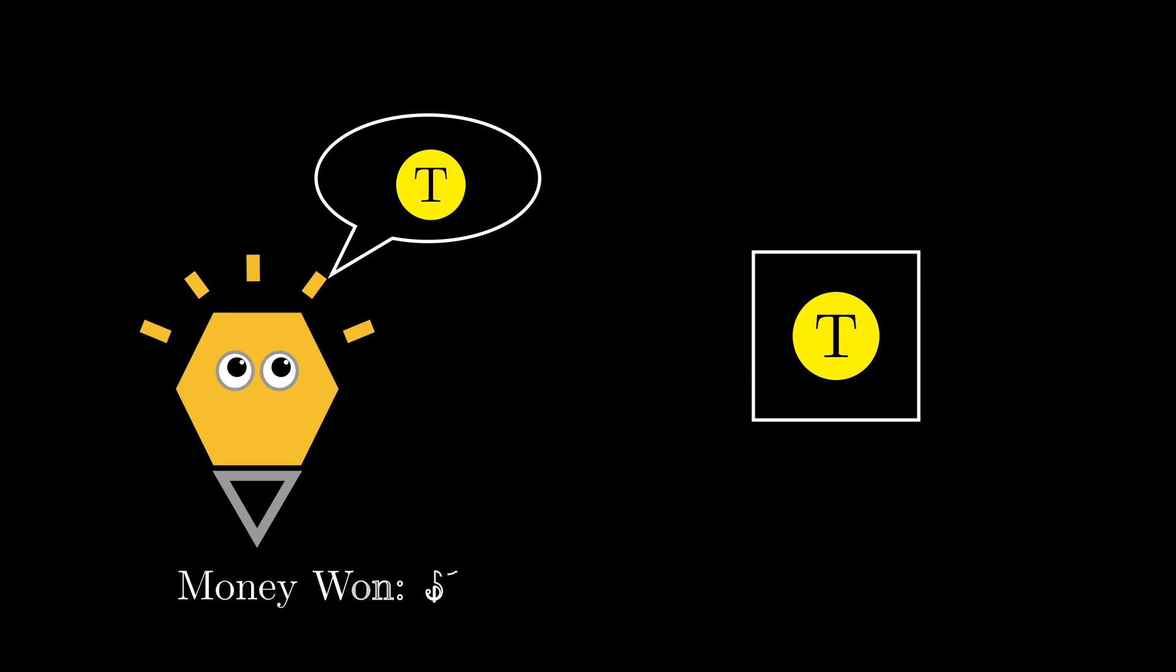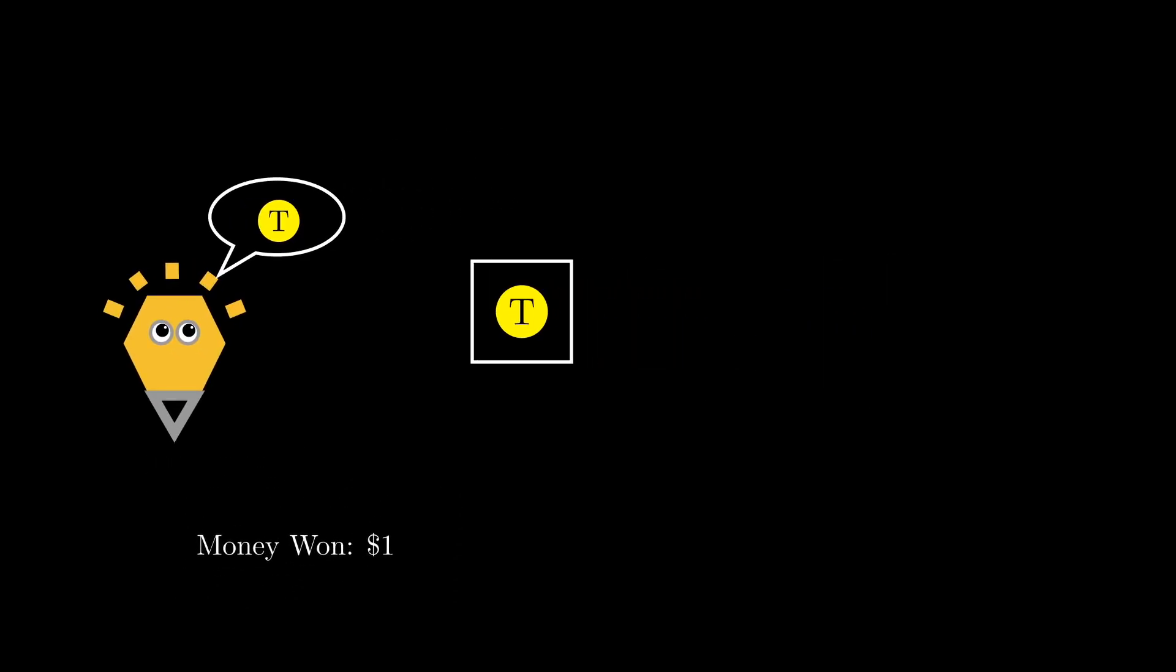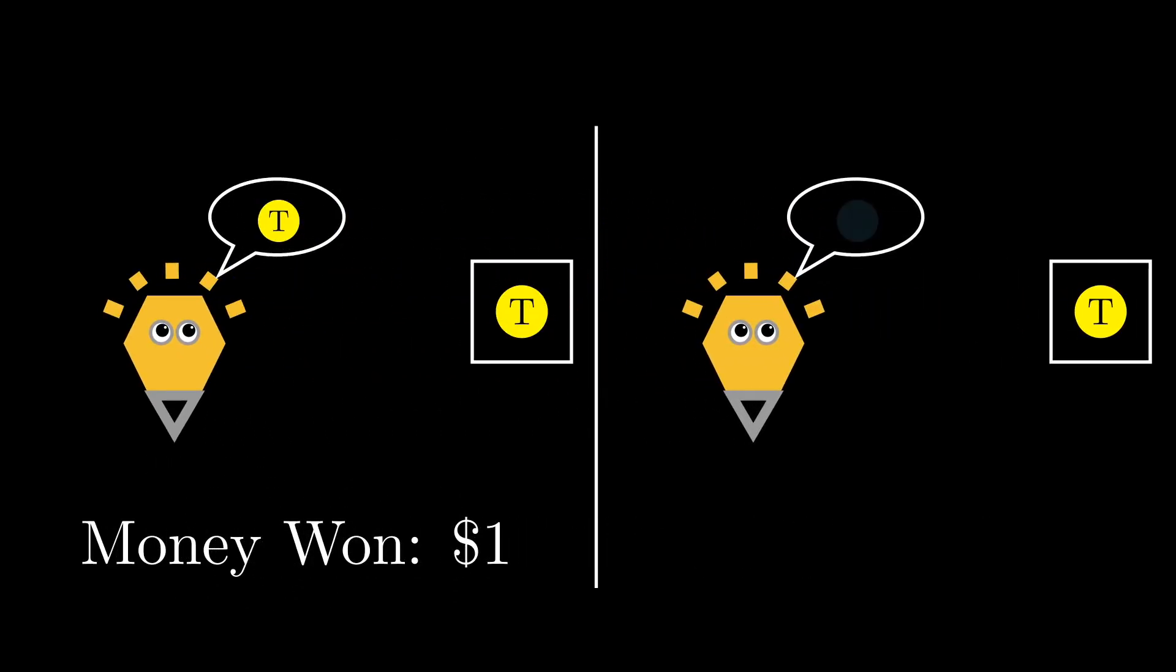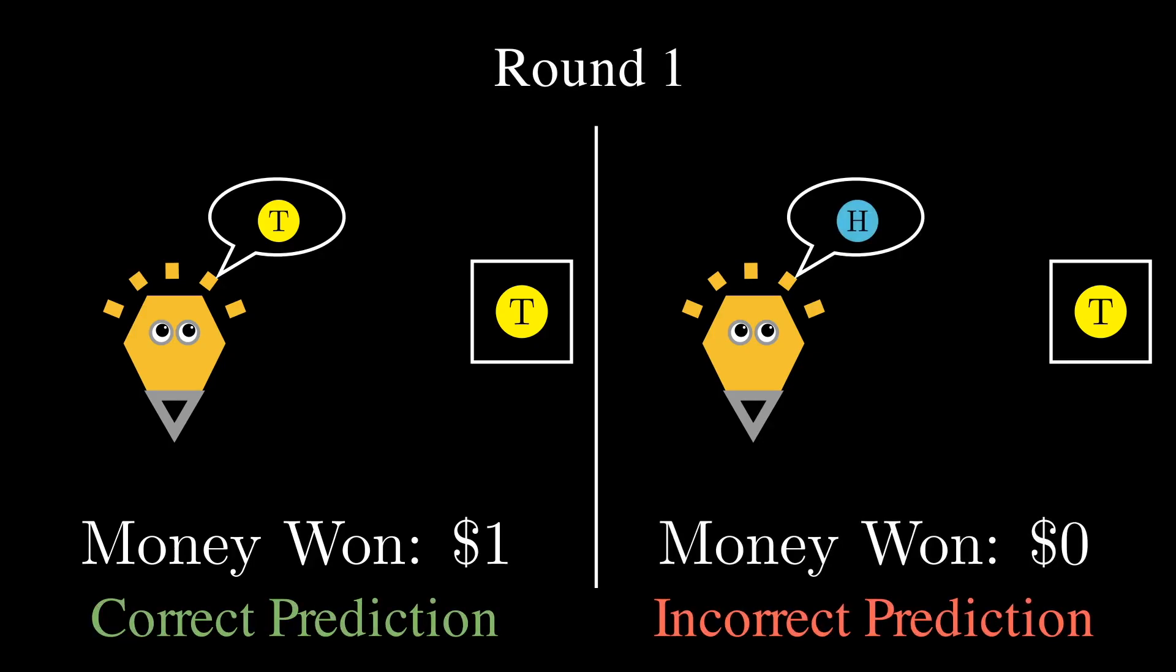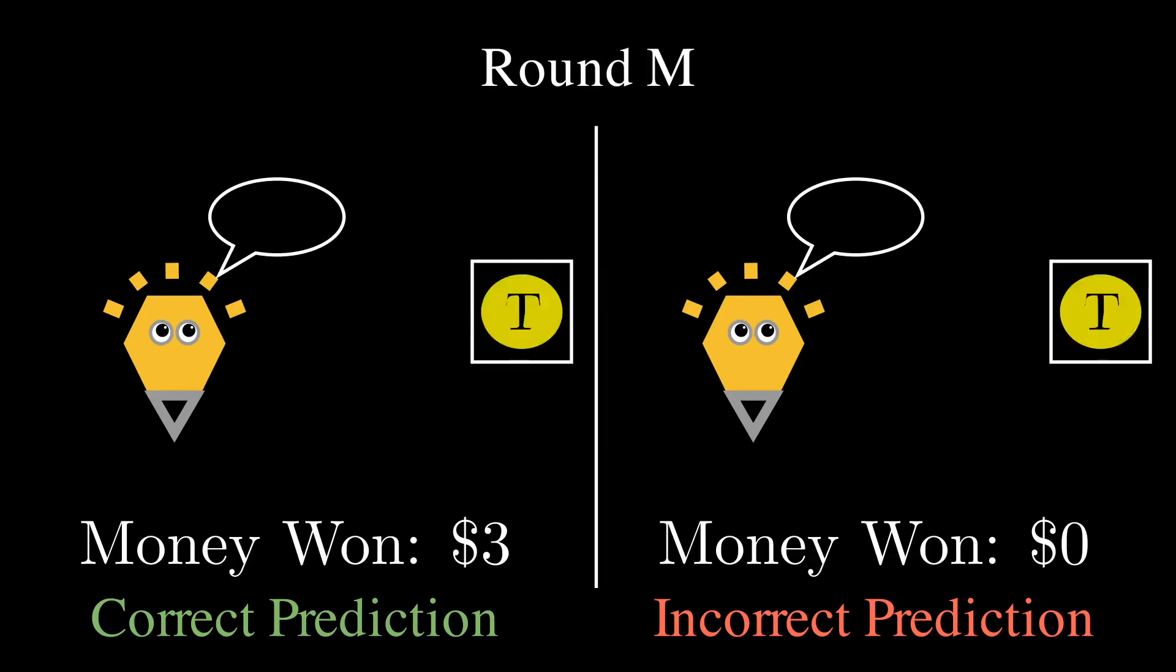Let's consider the following game. A coin is flipped and remains hidden to you. Your job is to predict what side is facing up. If you are correct, you earn $1. If incorrect, you earn nothing. This repeats for a total of m rounds, meaning you can win a maximum of m dollars if perfect, or $0 if never correct.